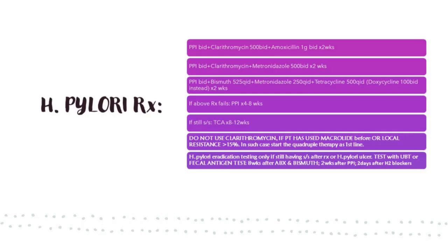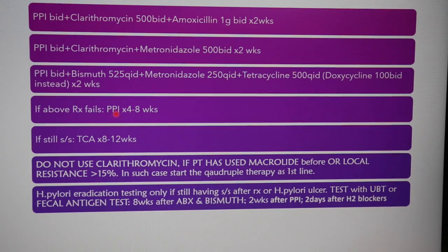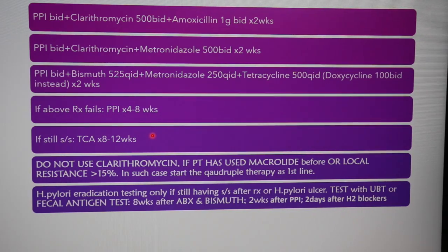The urea breath test is the most accurate test of all. The H. pylori treatment regimens are as follows: first-line therapy is PPI, clarithromycin, and amoxicillin. Second-line therapy, if they're penicillin allergic, is PPI, clarithromycin, and metronidazole. We also have quadruple therapy, the so-called PBMT, which is PPI, bismuth, metronidazole, and tetracycline. If the above treatment fails, treat the patient with PPIs for four to eight weeks, and if still symptomatic, try TCA for eight to twelve weeks. Do not use clarithromycin if the patient has used macrolides before or if local resistance exceeds 15% — in that case, start quadruple therapy as first-line.